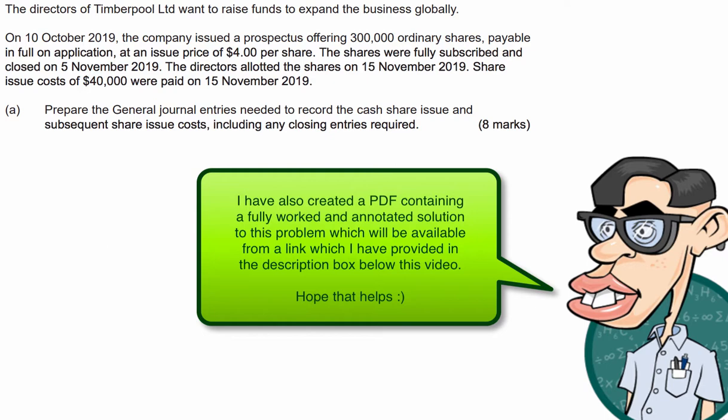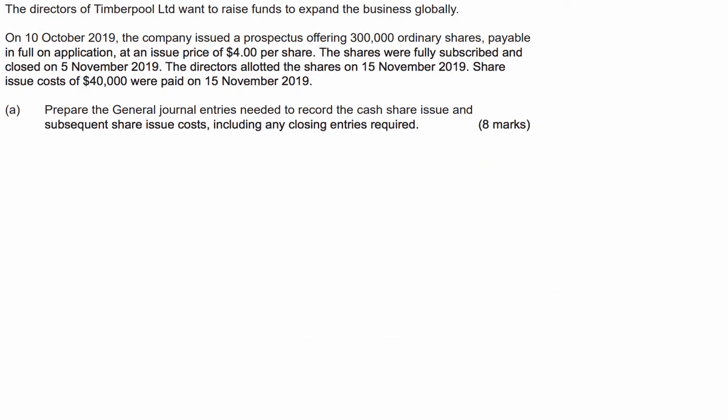The shares were fully subscribed and closed on the 5th of November 2019. The directors allotted the shares on the 15th of November, and the share issue costs of $40,000 were also paid on the 15th of November 2019. The question is asking us to prepare the journal entries needed to record the cash share issue and subsequent share issue costs, including any closing entries that might be required.